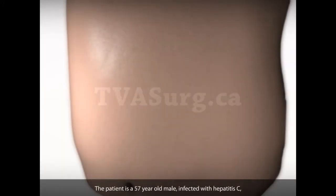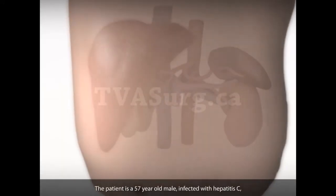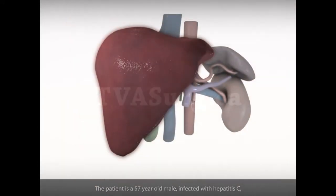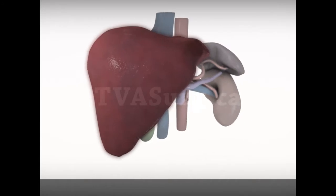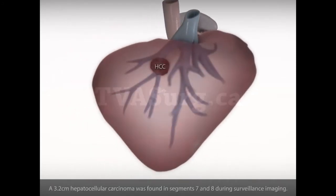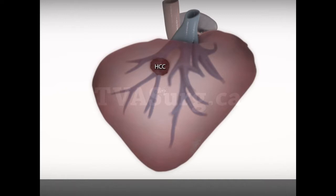The patient is a 57-year-old male, infected with hepatitis C, which caused mild Child's A cirrhosis with no portal hypertension. A 3.2 cm hepatocellular carcinoma was found in segments 7 and 8 during surveillance imaging. The tumor also involved the main right hepatic vein.